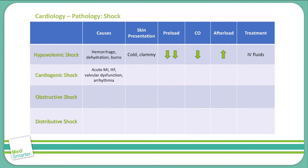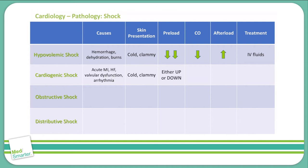In cardiogenic shock, we can see causes during acute myocardial infarctions, heart failure, valvular dysfunctions, and arrhythmias. Similar to hypovolemic shock, cardiogenic shock presents with cold and clammy skin. The preload can go either up or down depending upon what stage of cardiogenic shock we're in. Our cardiac output, however, will decrease — typically a strong or high decrease. In the same way as hypovolemic shock, we do see an increase in the afterload as a compensatory mechanism of the body.